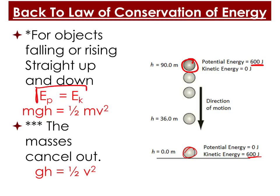We already know that potential energy equals kinetic energy at their maximum points — I cannot stress that enough. At an intermediate point, potential energy and kinetic energy do not equal each other. It only applies that the potential energy at the top equals the kinetic energy at the bottom. Potential energy is mgh and kinetic energy is one-half mv squared.